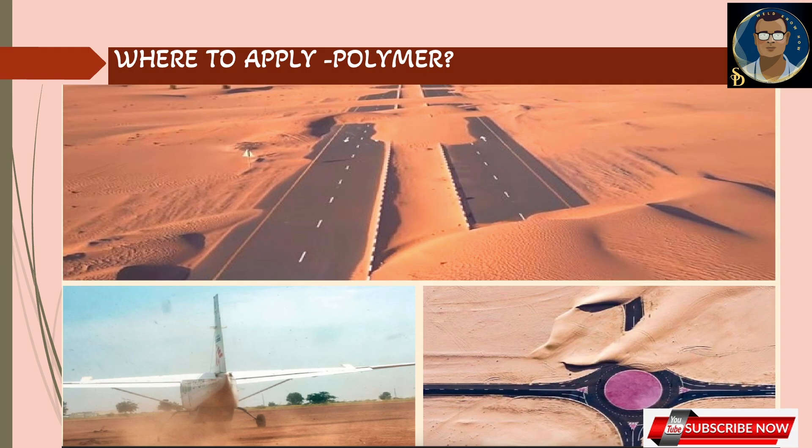Here are other possibilities for application of this polymer. You can see desert and sand-prone areas where asphalt roads are covered by windblown sand during sandstorms. These sands can be removed to the side of the road and the polymer spray applied there — even on helipads and road intersections.